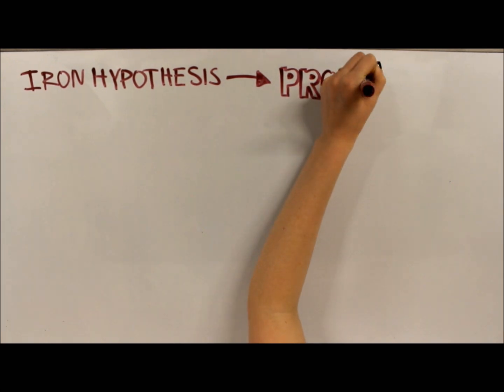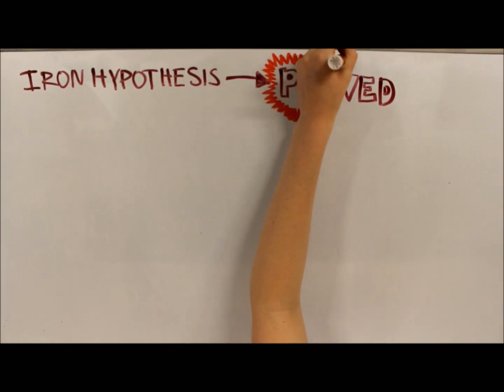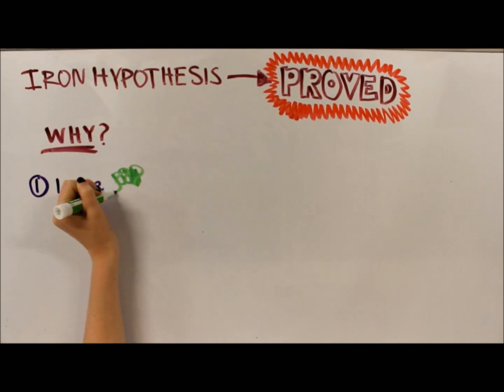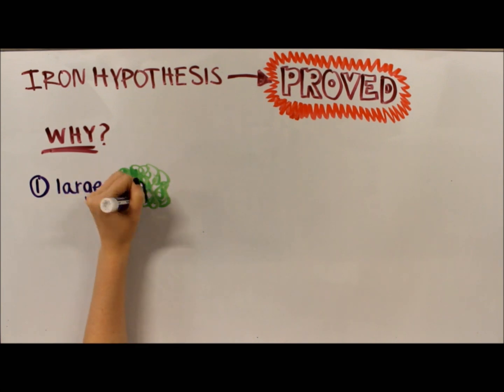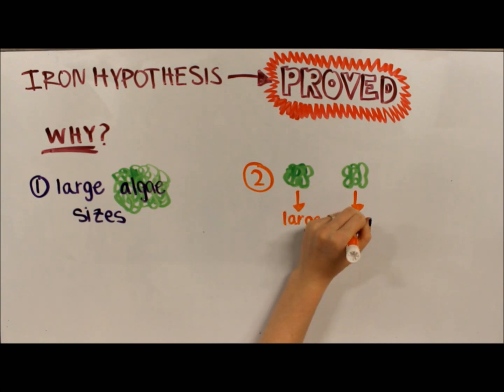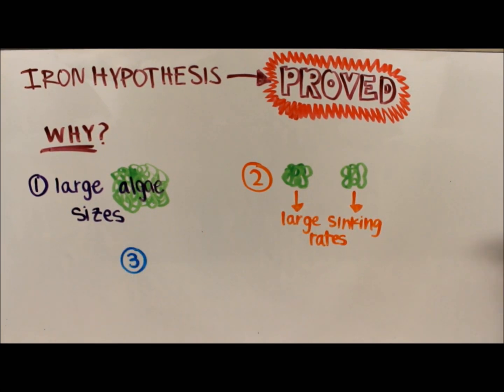It can be concluded that the iron hypothesis is true. This is supported by three of the results. The increase in chlorophyll shows there was an algae bloom. The large decline in carbon is because algae absorbed it, died, and sank to the ocean floor. There were low respiratory losses, so it can be said that CO2 was not reintroduced to the atmosphere.